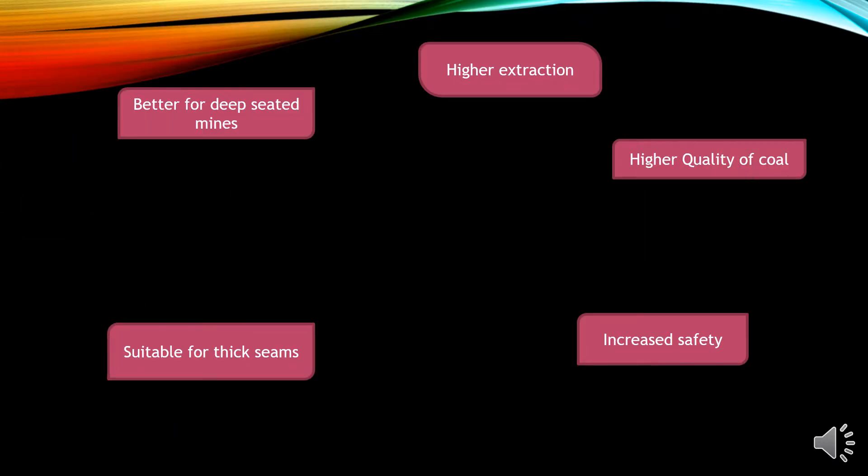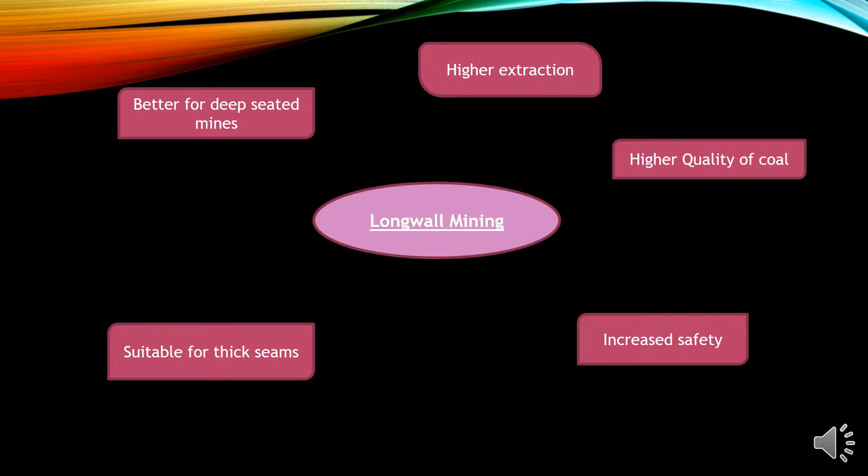Why longwall can be better understood with the following five factors: it has a higher percentage of extraction as compared to board and pillar; higher quality coal can be extracted from deep-seated mines; it increases safety with the use of self-advancing roofs; and it is also suitable for thick seams.